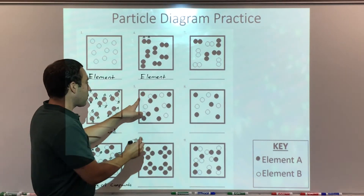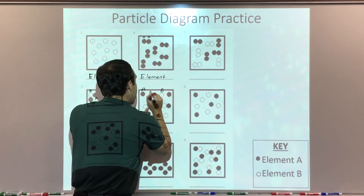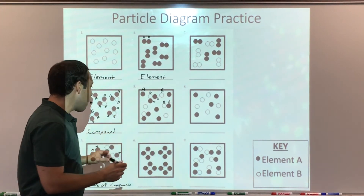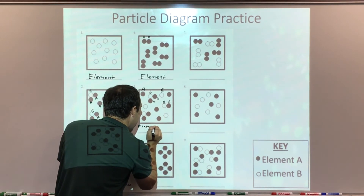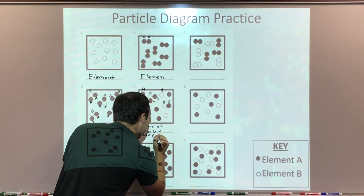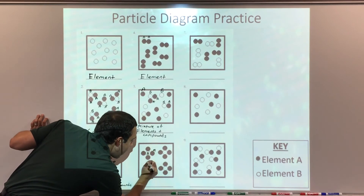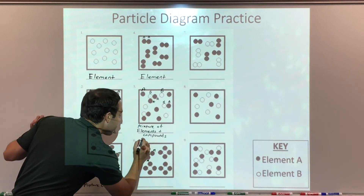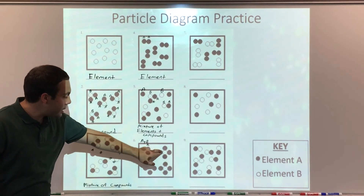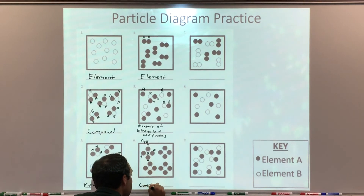Problem number five: I see element A, element B, and also a compound with a B and two A's, and another compound with an A and a B. I have elements and compounds mixed together, so particle diagram number five is a mixture of elements and compounds. Problem number six: I see a B in the middle surrounded by four A's — compound A4B, or BA4. I see the same compound repeated, so problem number six is all of the same compound.